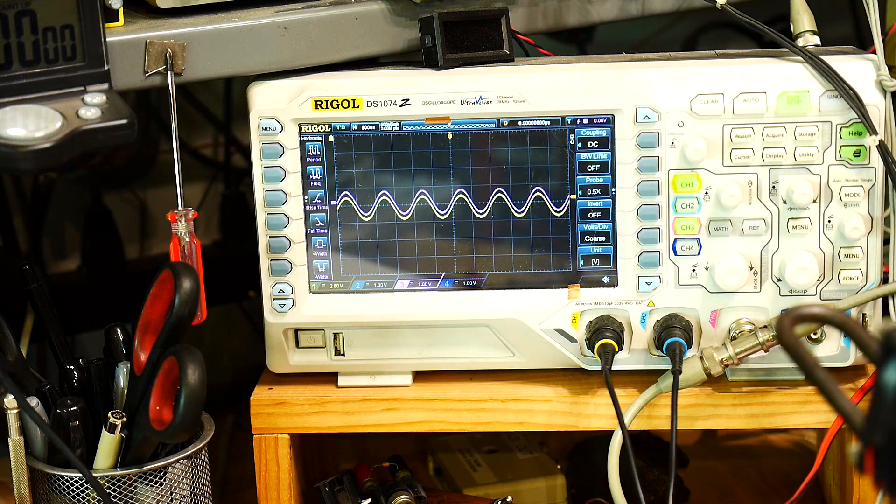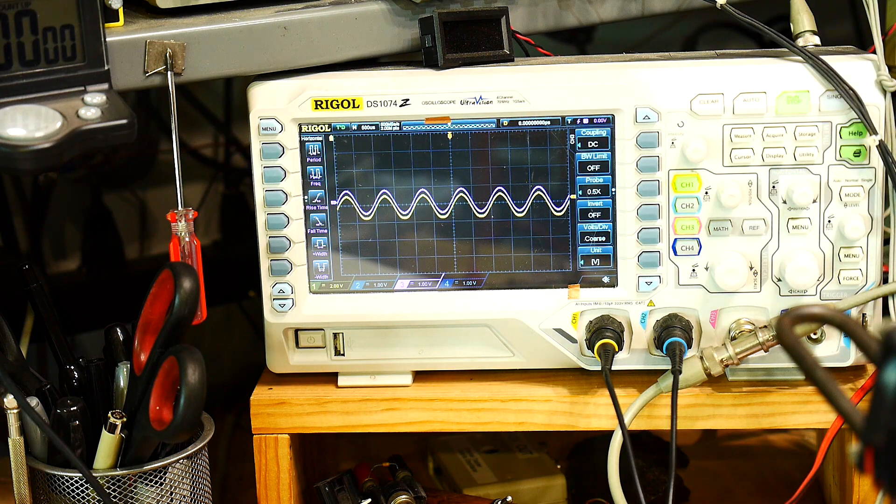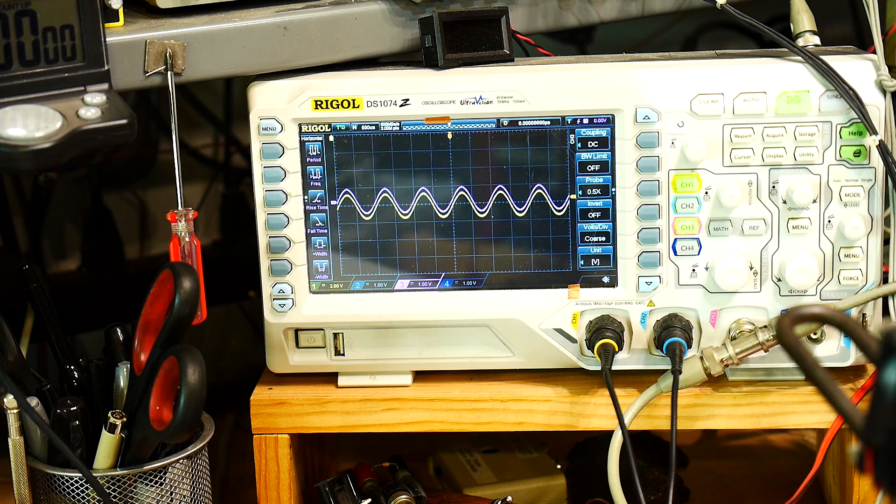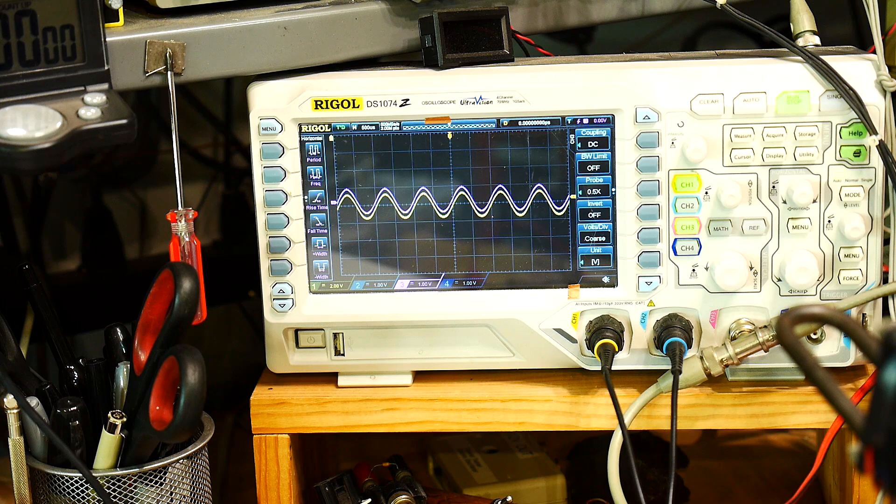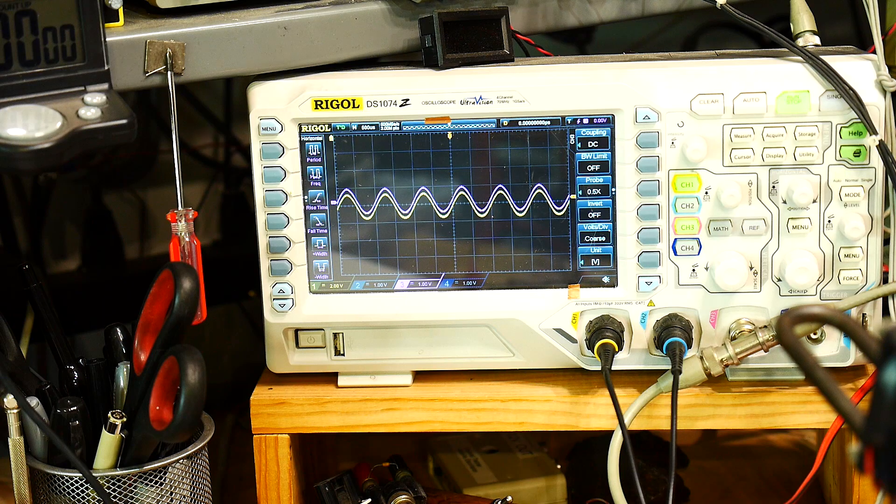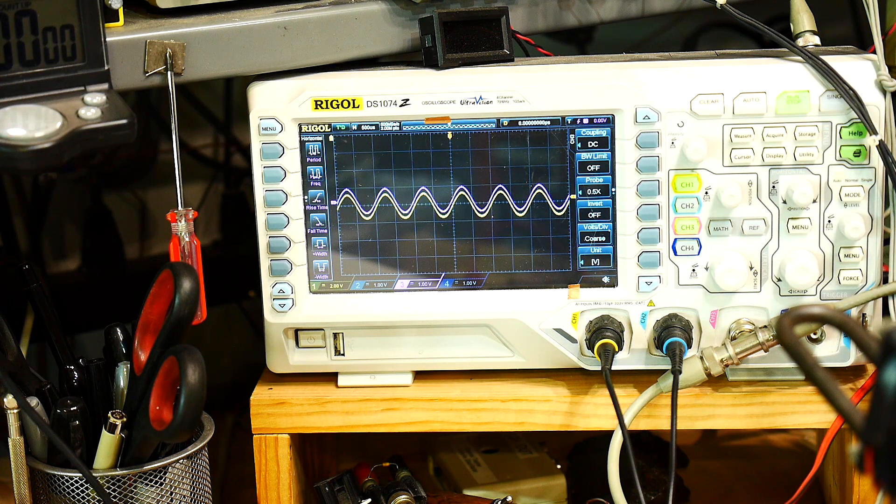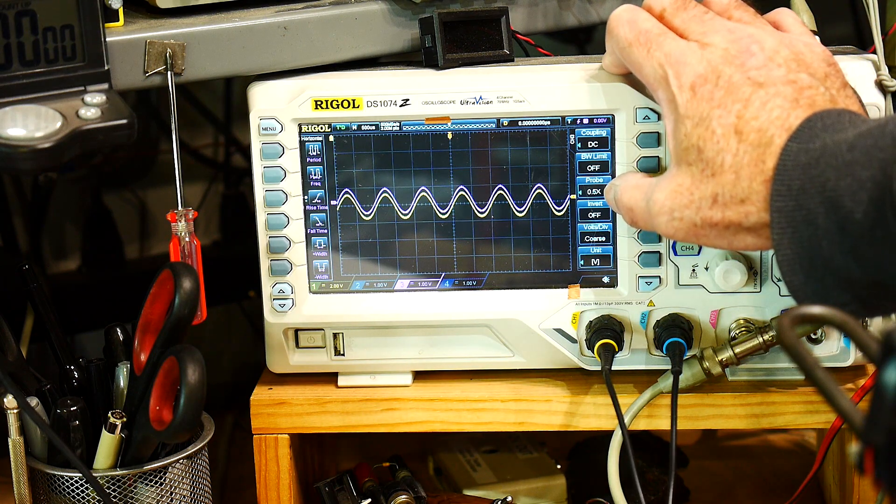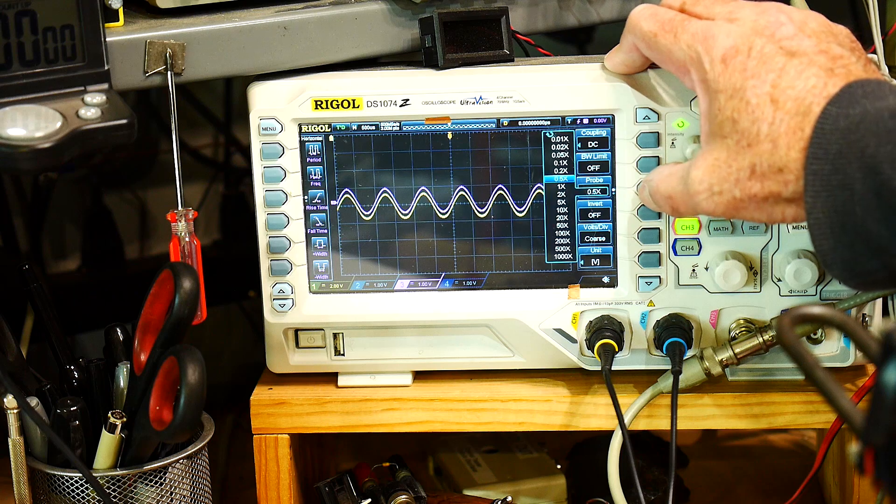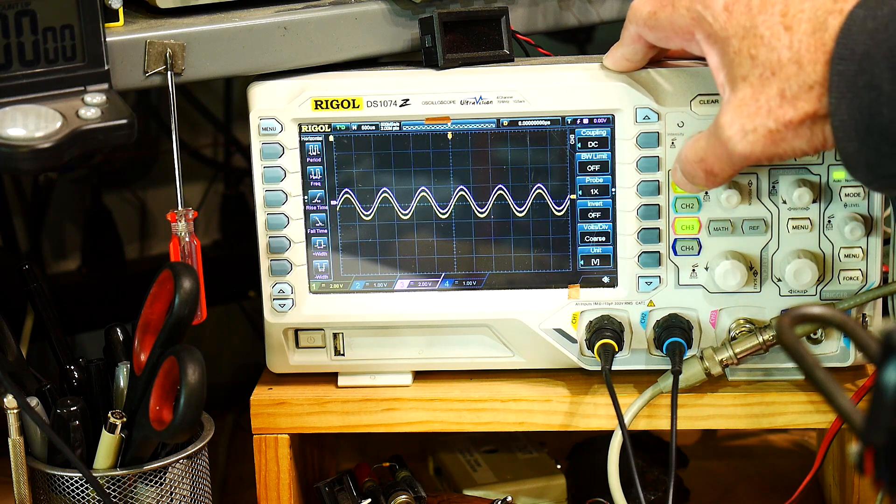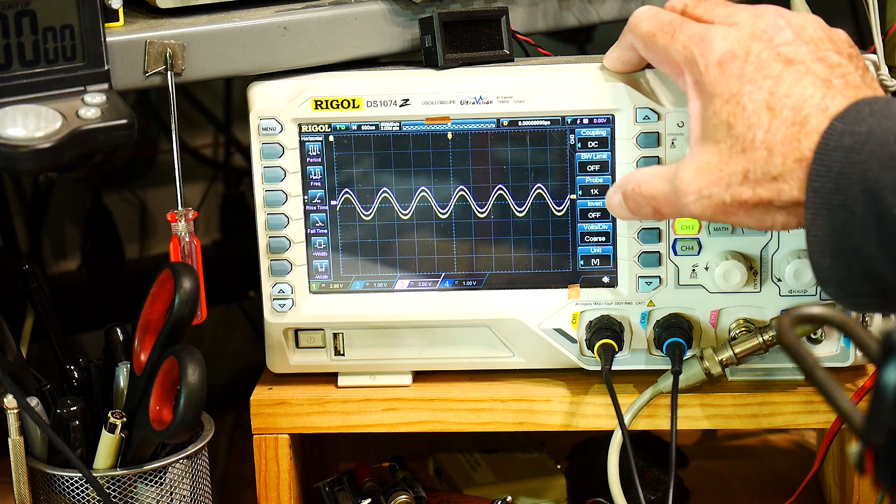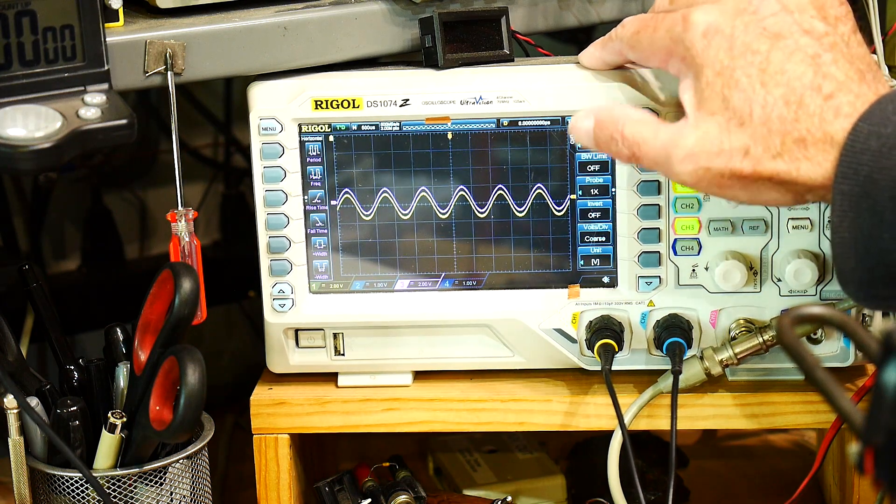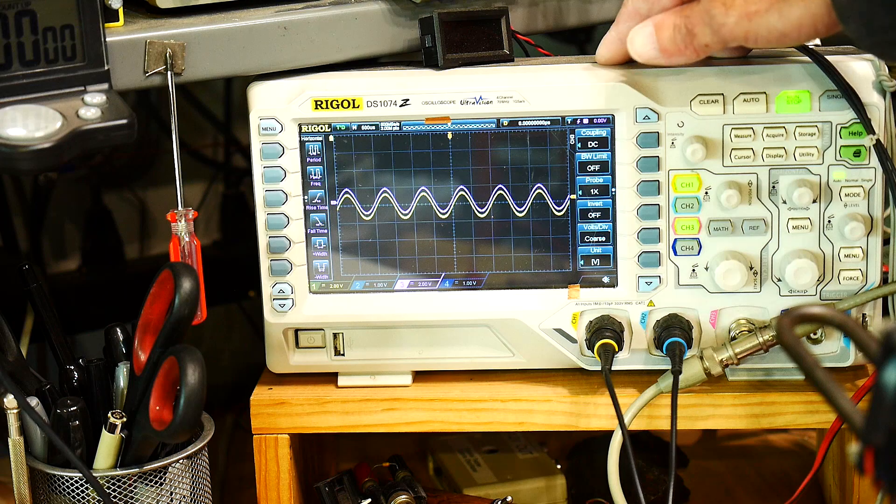So purple is input. Yellow is output. And the gain is, should there be gain? I guess there shouldn't be gain actually. Let's see here. Probe. Oh, I made a probe times one. There we go. Times one. Now we are at two volts and two volts. There we go. Same scale. So there's no gain. Two volts in, two volts out.